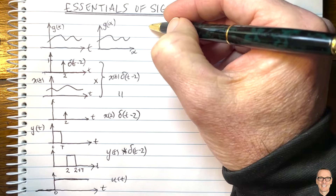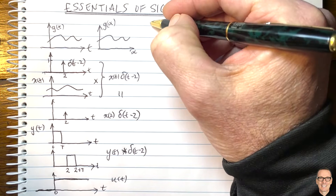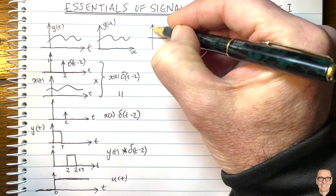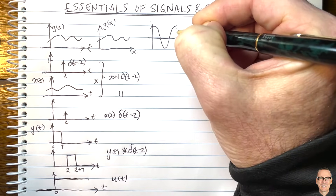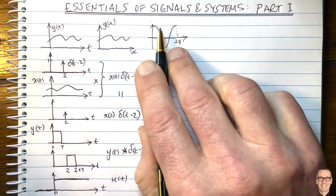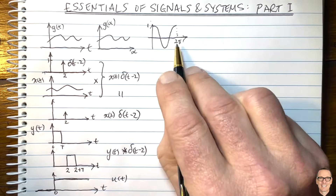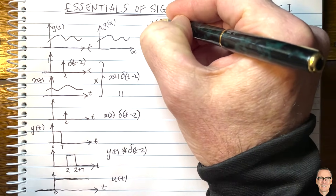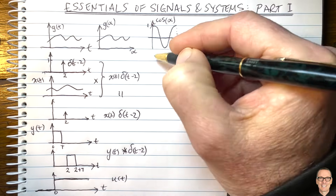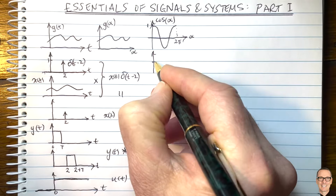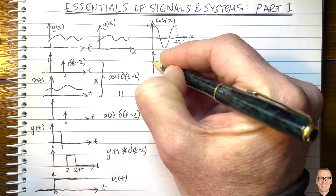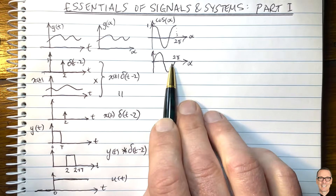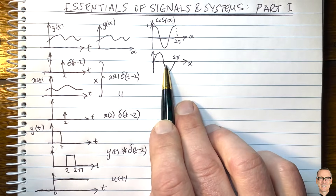Another important skill in signals and systems is being able to sketch the cosine and sine waveforms. You should be able to sketch the cosine freehand: it starts at one, goes to negative one, and returns to one over a period of two pi. Sine of alpha starts at zero and goes through a full period over two pi. These are essential things you should be able to plot without even thinking about it.